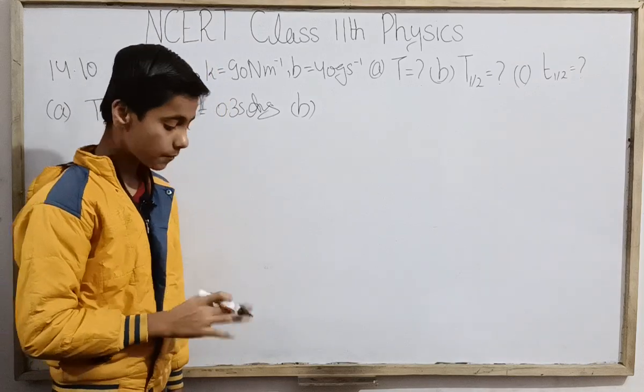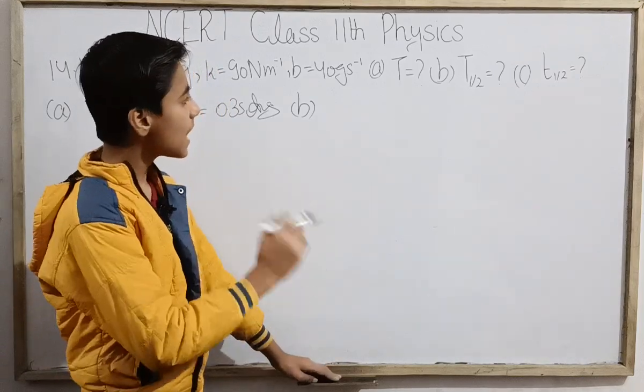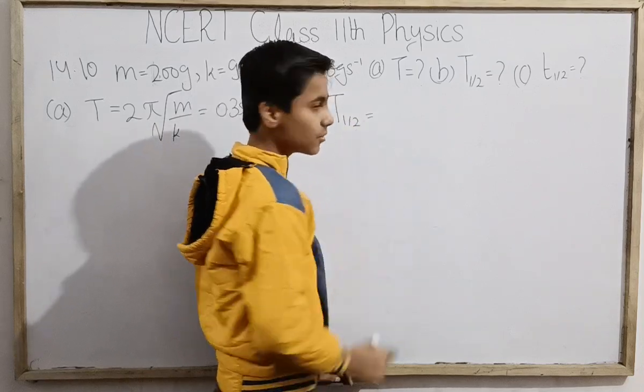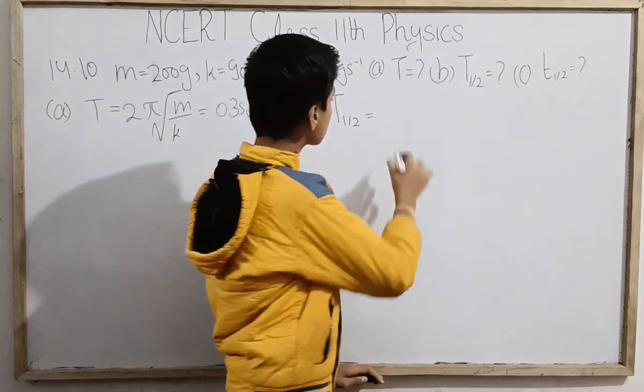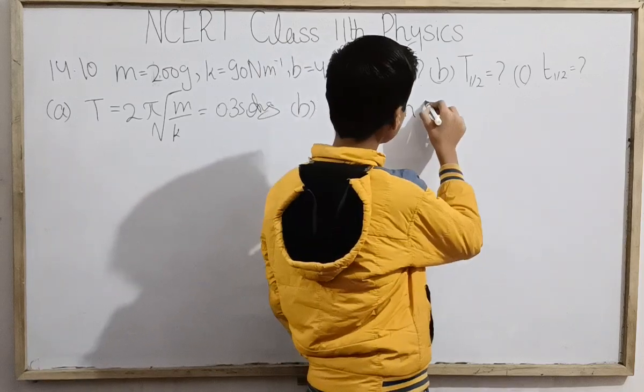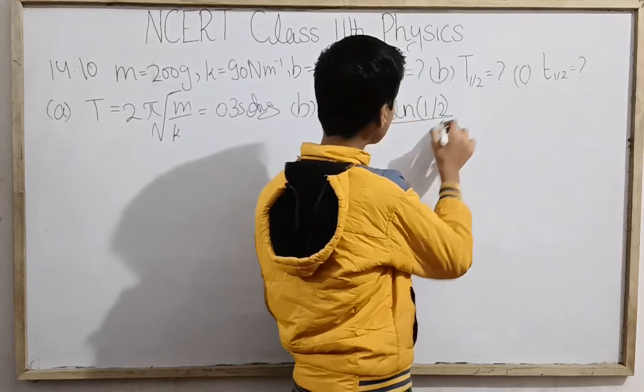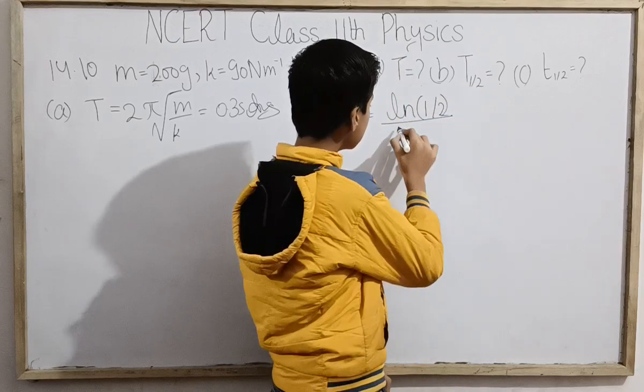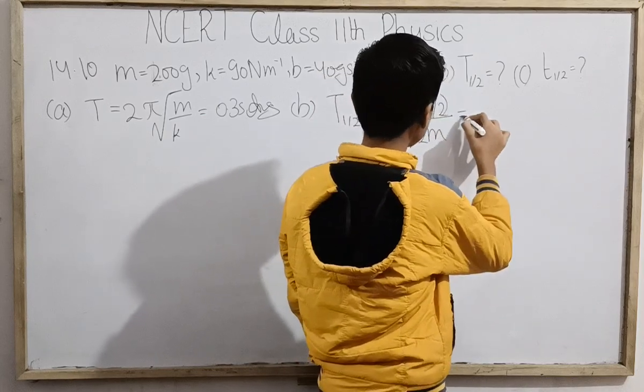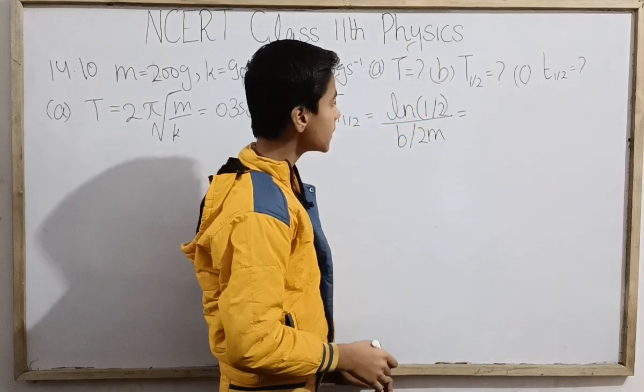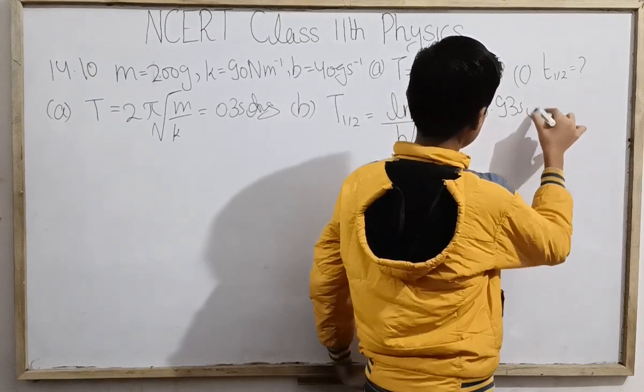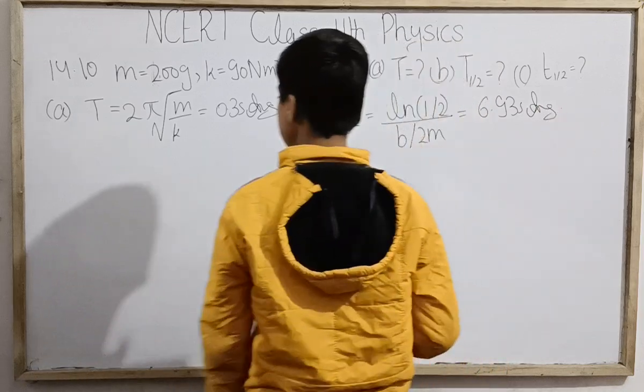For part (b), amplitude drops to half its initial value. We write the equations: amplitude half its initial value means ln(1/2) = -bt/(2m). Putting the values, we get t = 6.93 seconds. That is the time taken.